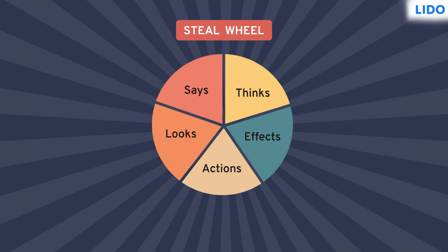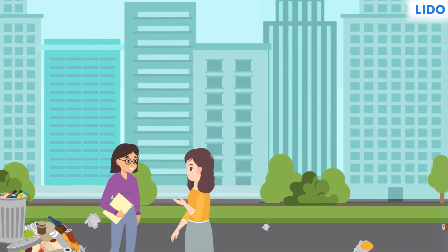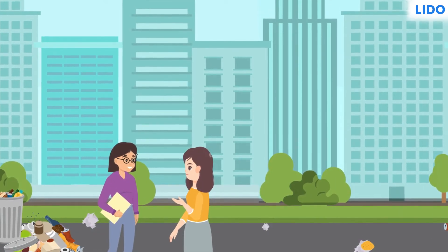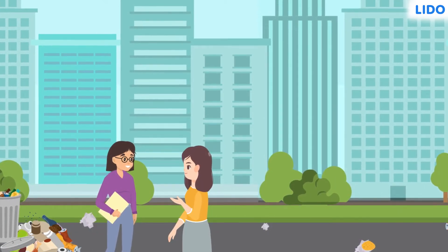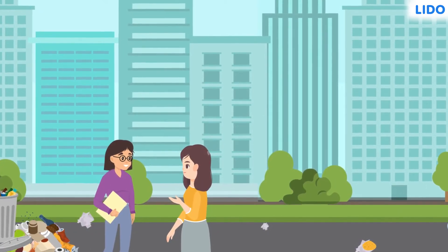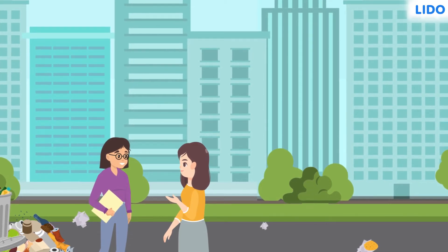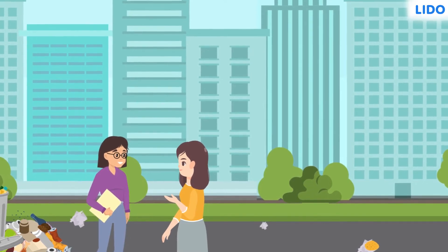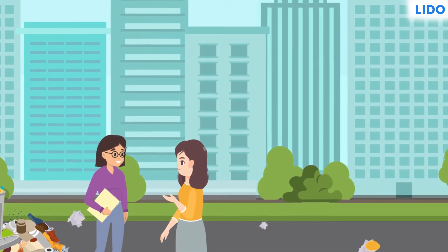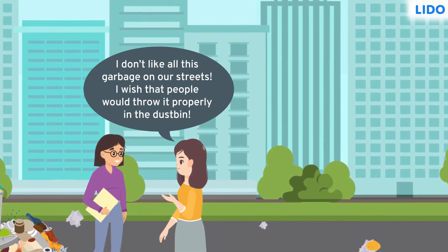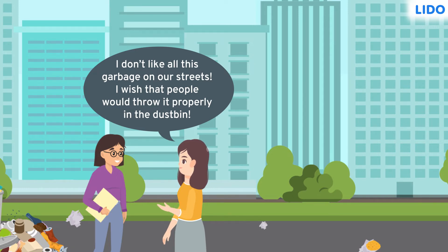Let's get on this STEEL wheel to learn more. Let's see Shazia's story to find out why she became a superhero. She doesn't wear a cape but wants to save the world in her own way. She complains to her friend that she is fed up with people throwing trash on the streets and not in the dustbin.